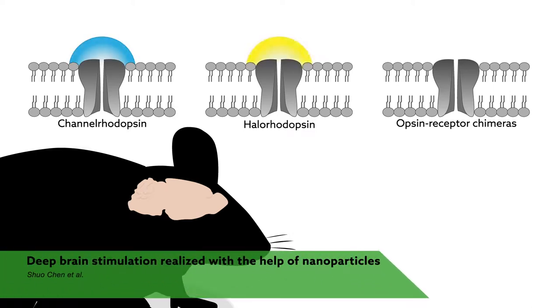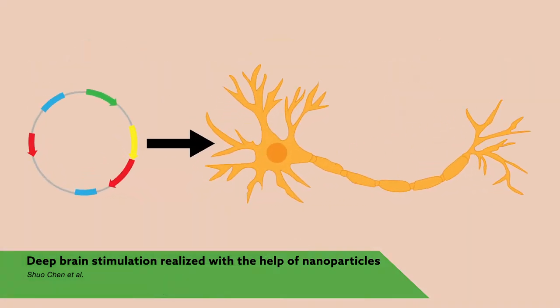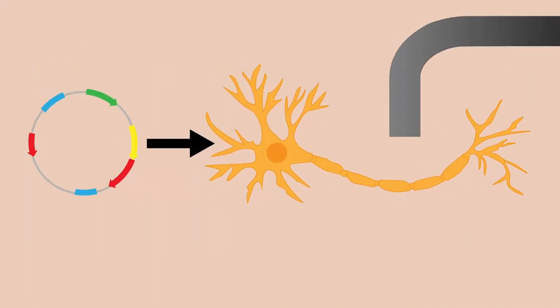Light-responsive proteins have revolutionized our understanding of the brain. By introducing the genes encoding these proteins into neurons and then exciting the cells using lasers, a technique known as optogenetics, individual cells can be rapidly turned on or off, enabling exquisitely sensitive investigations of brain function.